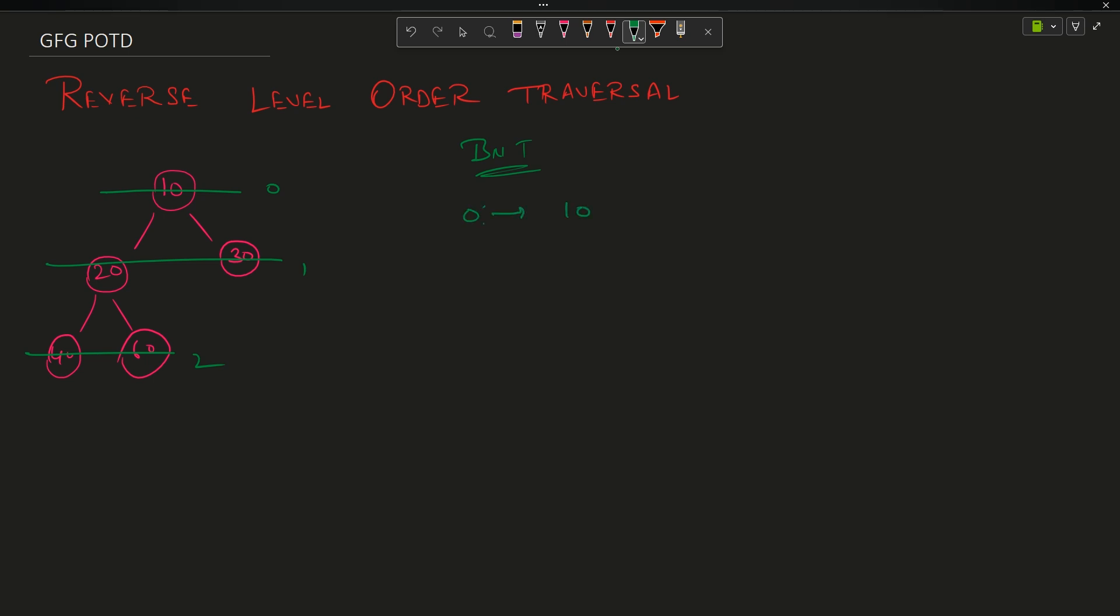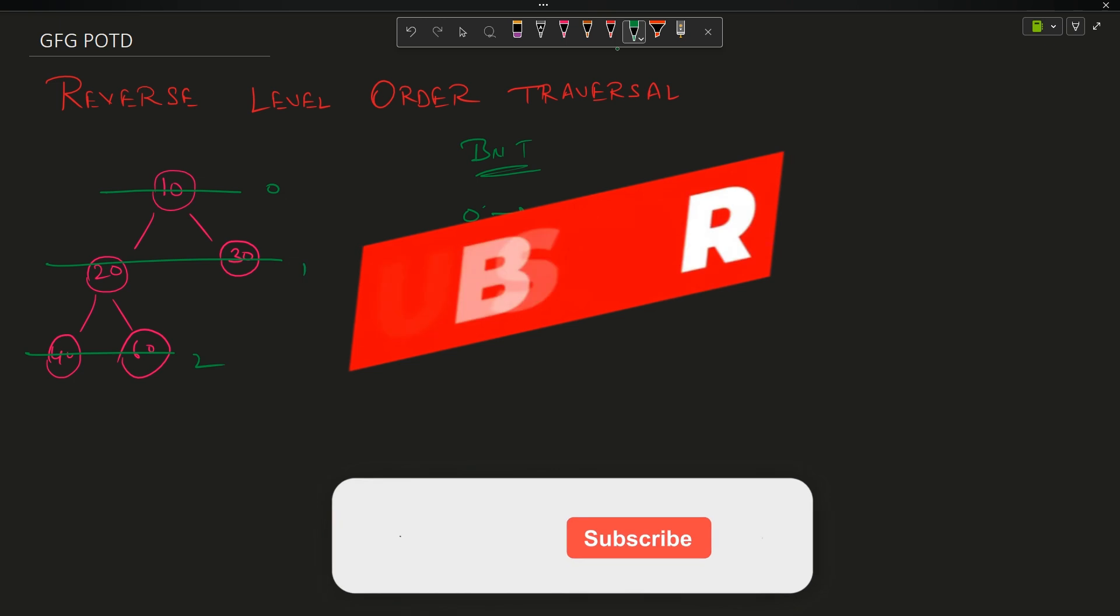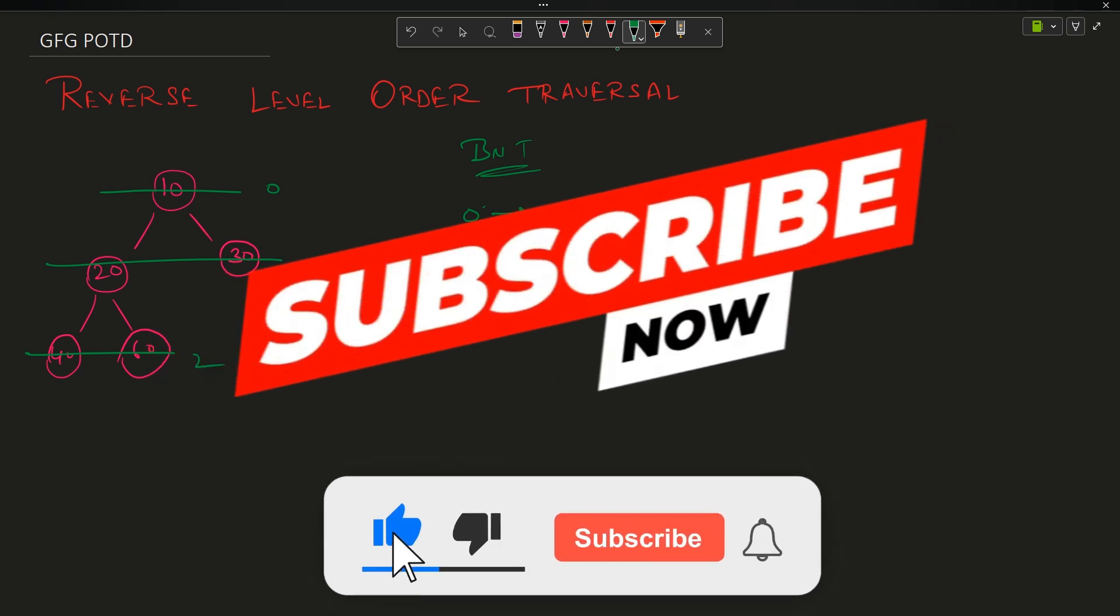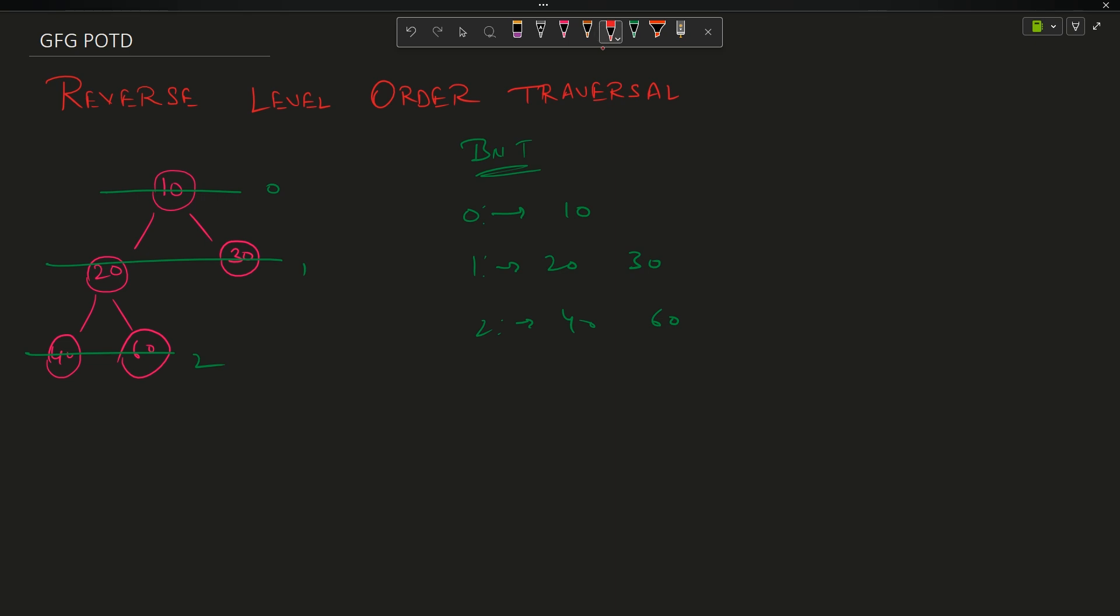Now you can see the horizontal levels are level 0, level 1, level 2. In my level 0 what are my nodes? It is 10. In level 1 it is 20, 30. In level 2 it is 40, 60. So if the question had asked us the simple level order traversal, so simple level order traversal is actually 10, 20, 30, 40, 60. I have already discussed how to find out the level order traversal, the link is in the description for the video. Please before proceeding with the question please check that out because I am not going to explain the concept again. It is an important concept, it is a prerequisite to know how to find out the level order traversal of a binary tree.